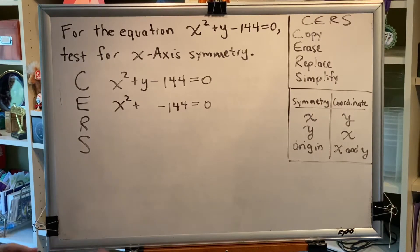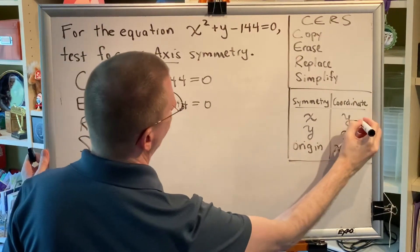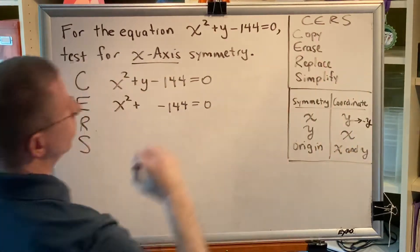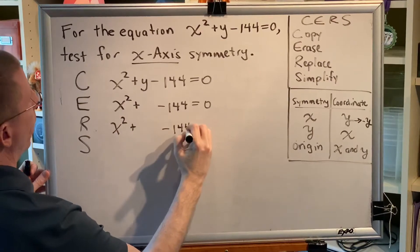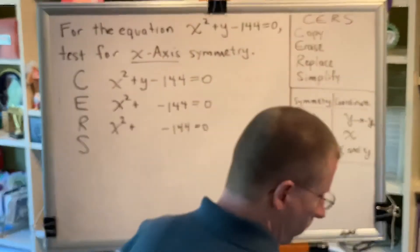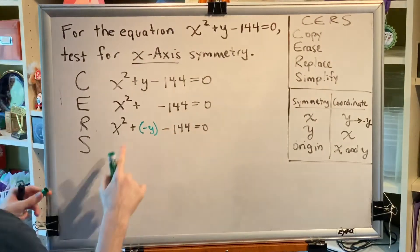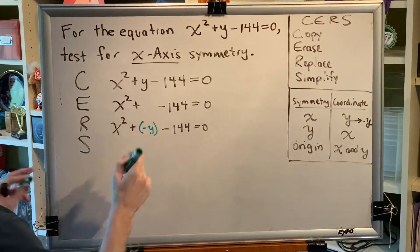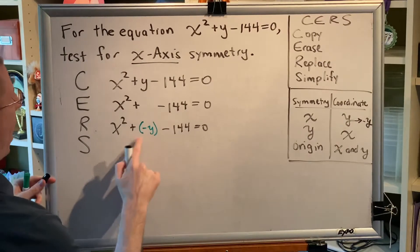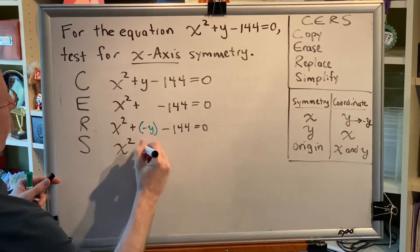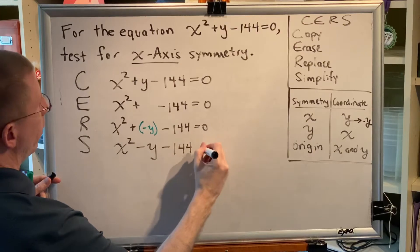Next, replace. We're testing for x-axis symmetry, so y has to be replaced with negative y. Wherever we used to have y, we put negative y in parentheses — because without the parentheses, you'd have a plus and a minus symbol side by side, which is not allowed in math. Finally, simplify. Adding a negative is the same as subtraction, so we simplify this to x squared minus y minus 144 equals zero.